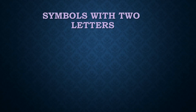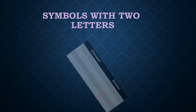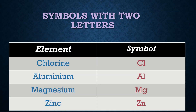When two letters are used in a symbol, the first letter should be a capital letter and the second letter should be a lowercase letter. Some examples are chlorine, aluminum, magnesium, and zinc.